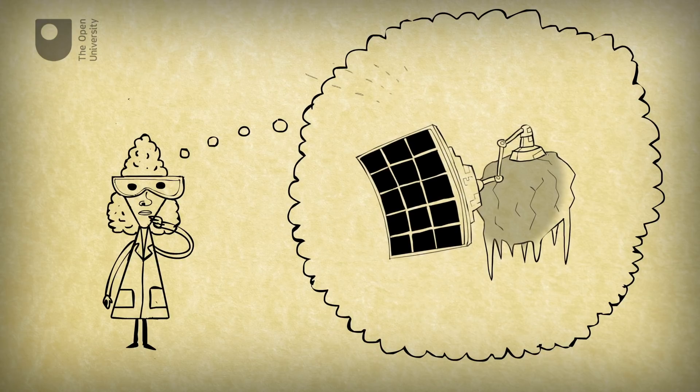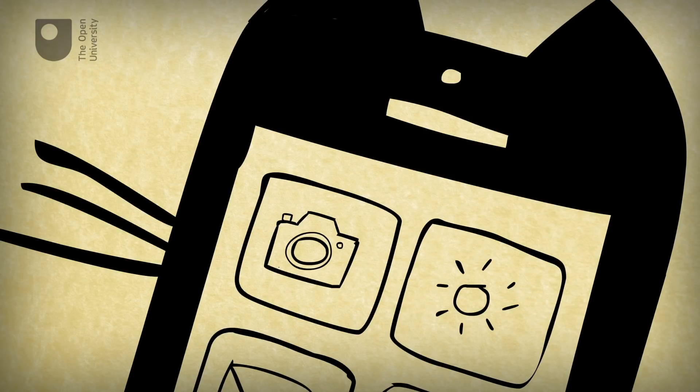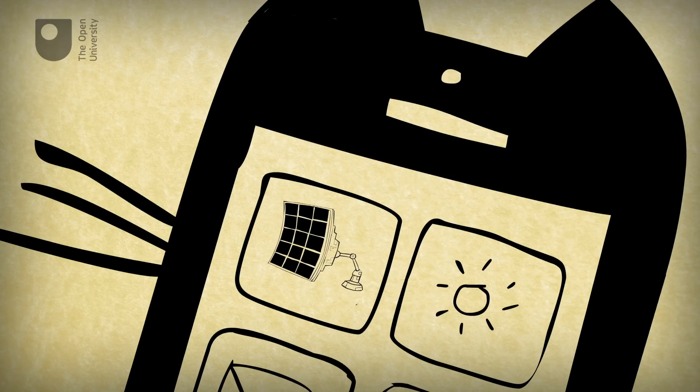But something that has already spread over the planet is the mobile phone. So scientists developed apps to turn camera phones into mini particle detectors.